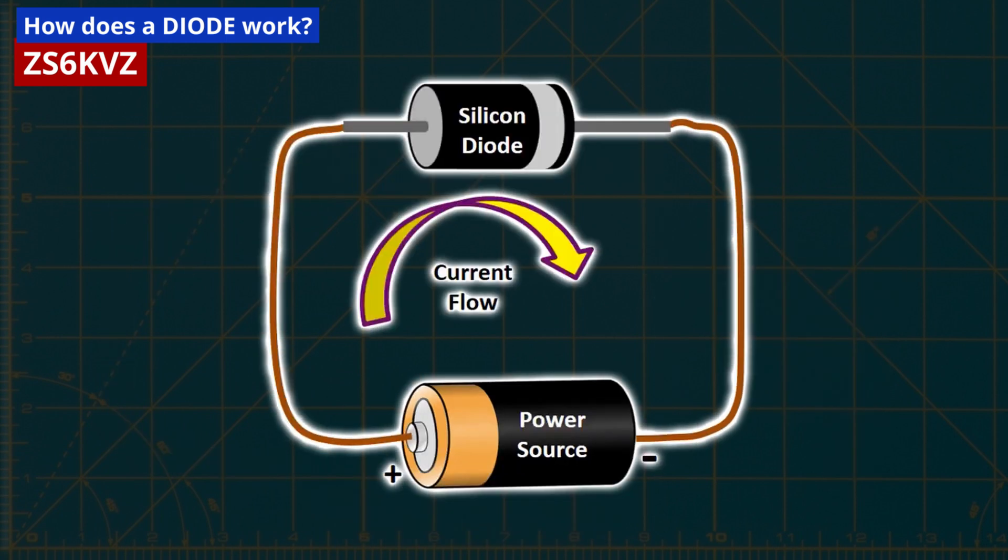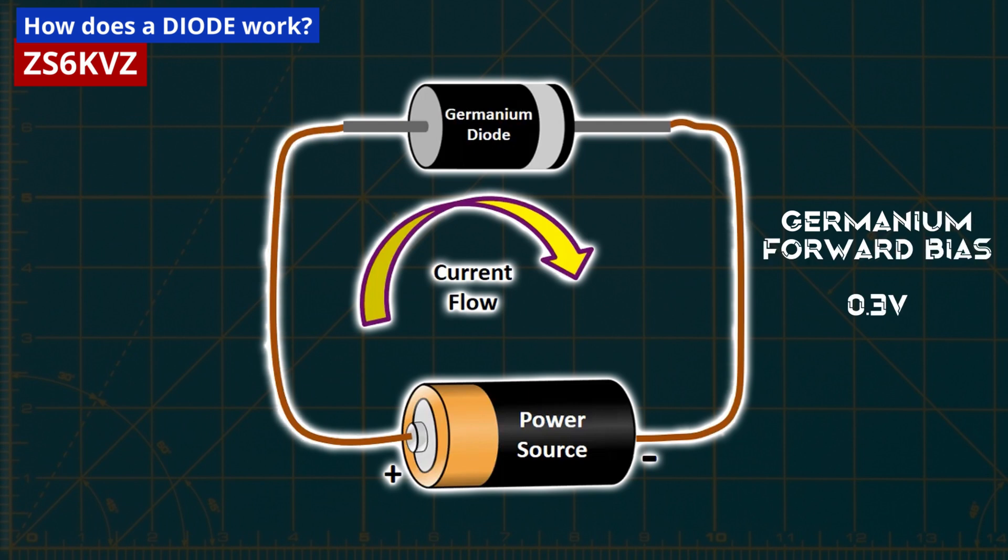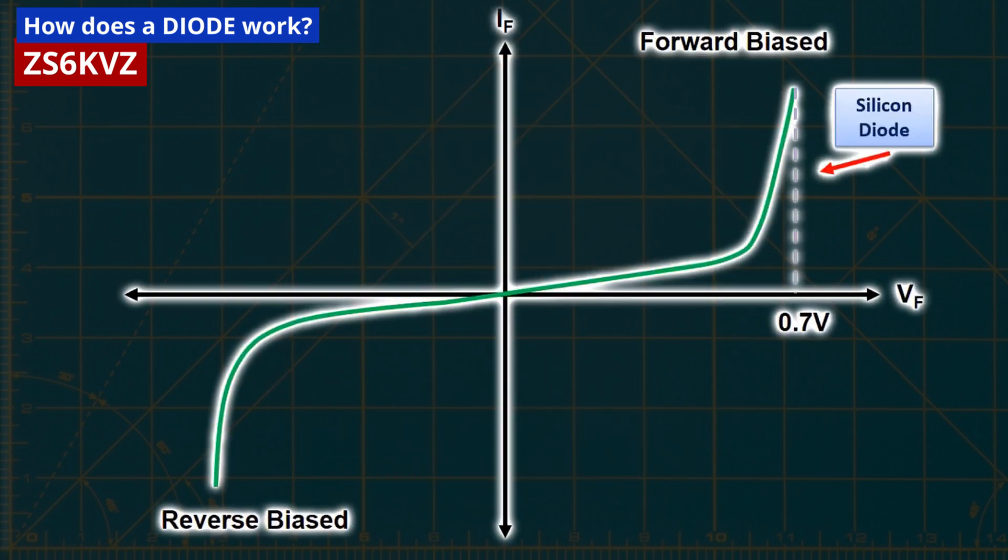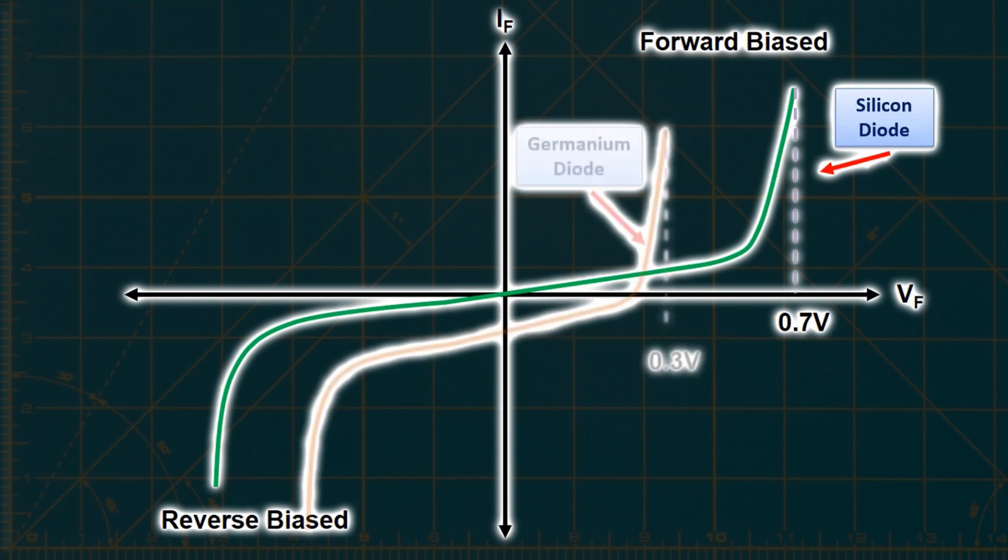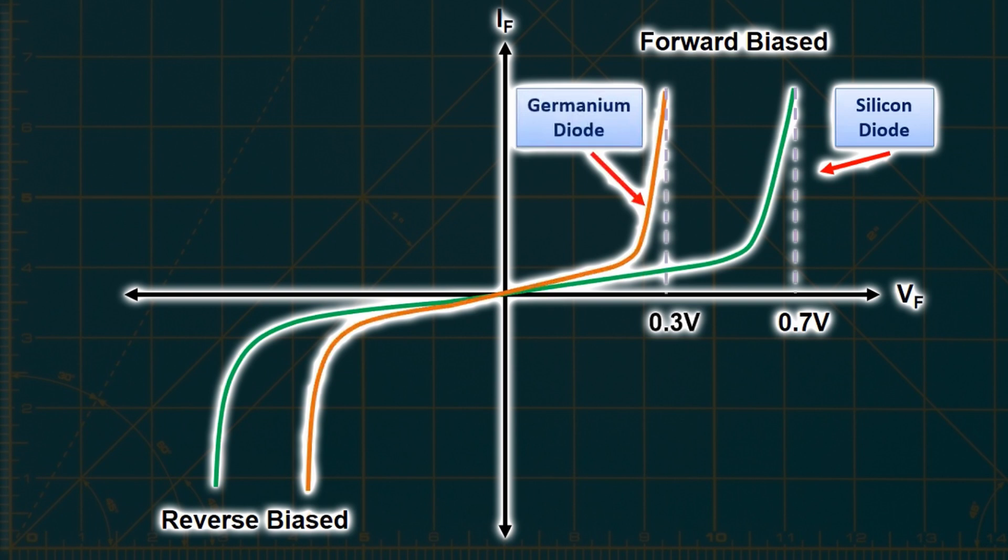It's important to note that the voltage value at which a diode allows current to flow differs depending on the material used. For a normal silicon diode, it typically allows current to flow after reaching a voltage of approximately 0.7 volt. On the other hand, a germanium diode allows current to flow after reaching a voltage of around 0.3 volt. However, these values may vary for different diodes, but for theoretical circuit analysis, these values are commonly considered. We can represent the relationship between current and voltage in a diode using a current-voltage graph. The current-voltage graph for a normal silicon diode shows that it allows current to flow after reaching approximately 0.7 volt and is polarized forward. Likewise, the current-voltage graph for germanium diode shows that it is polarized forward and allows current to flow after reaching approximately 0.3 volt.